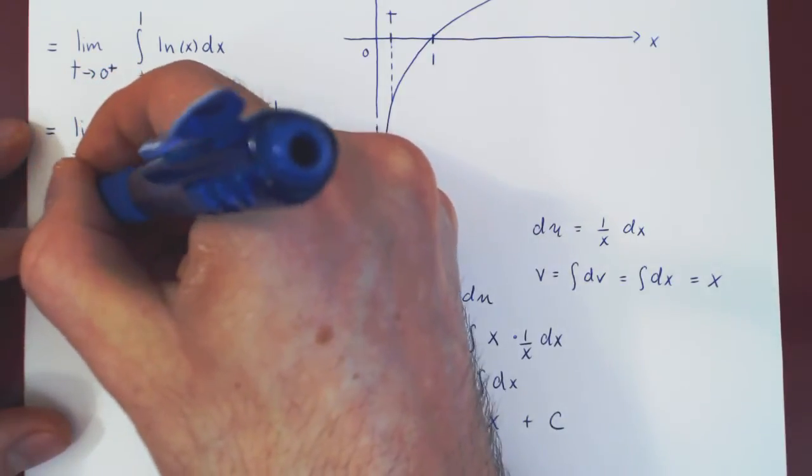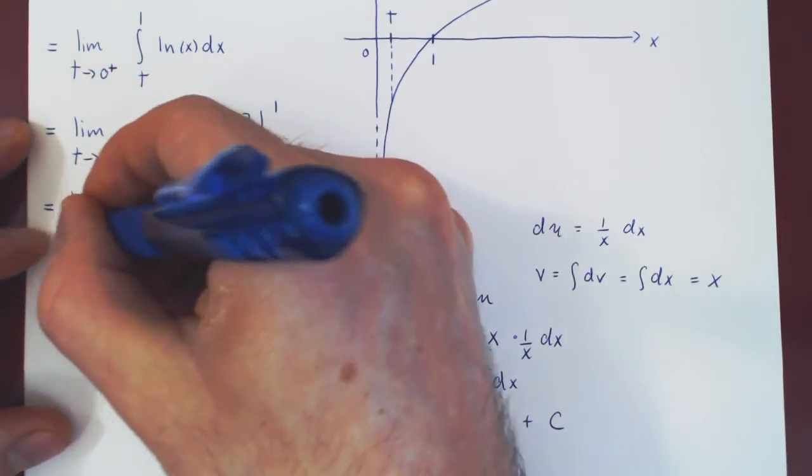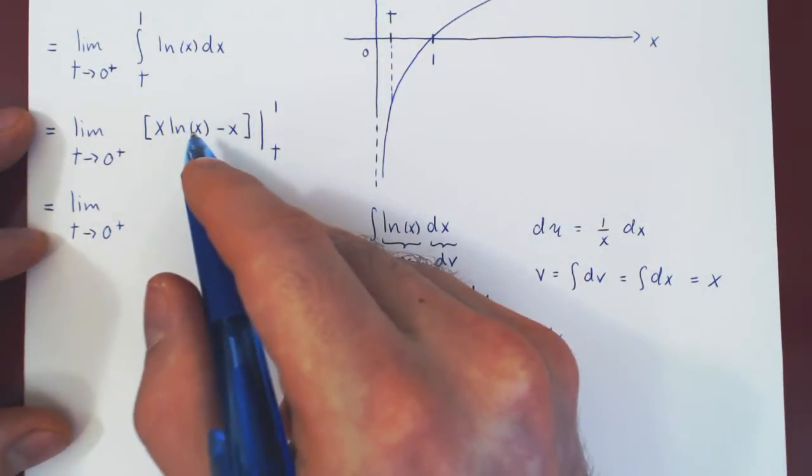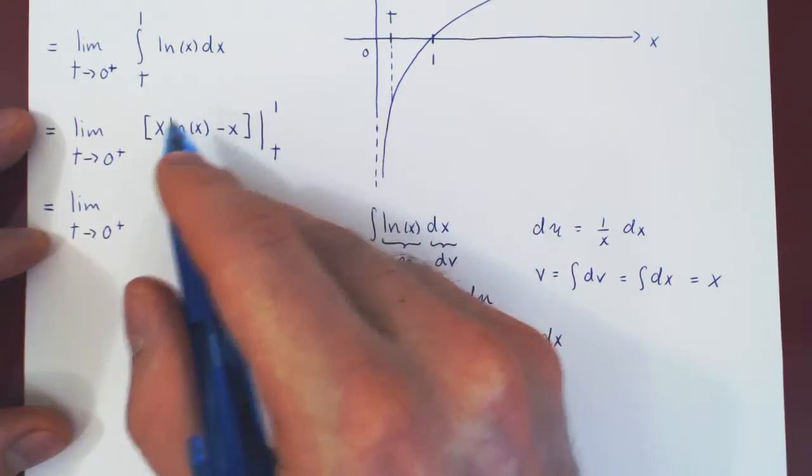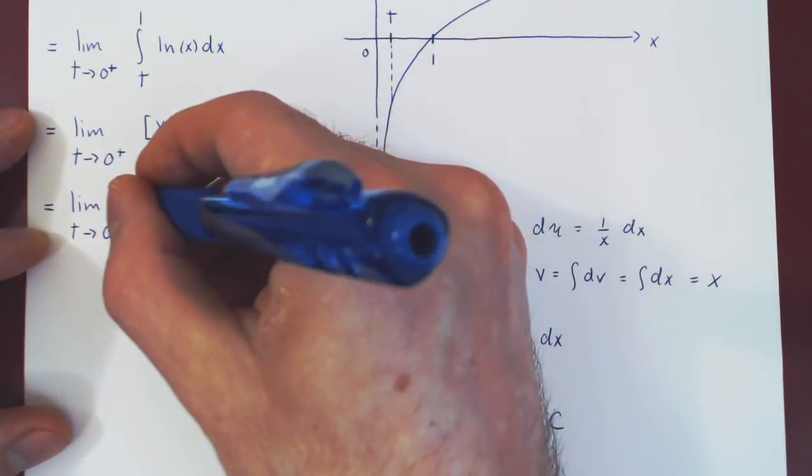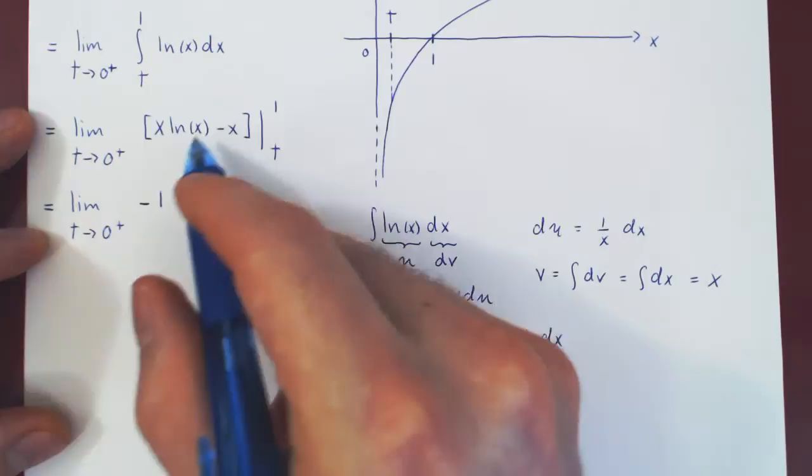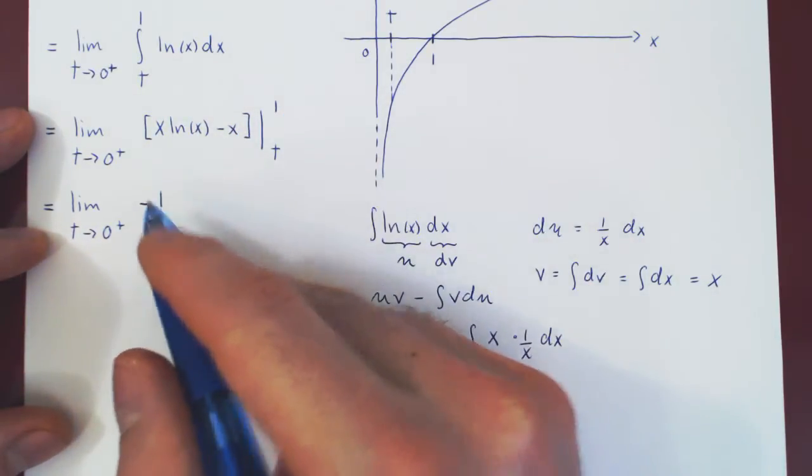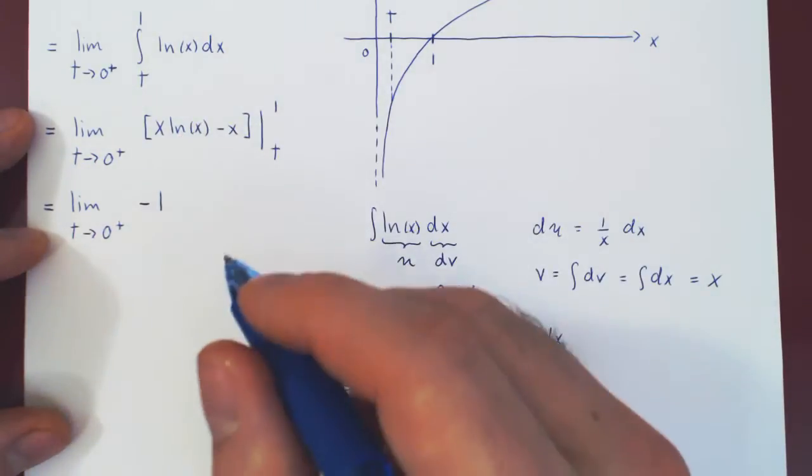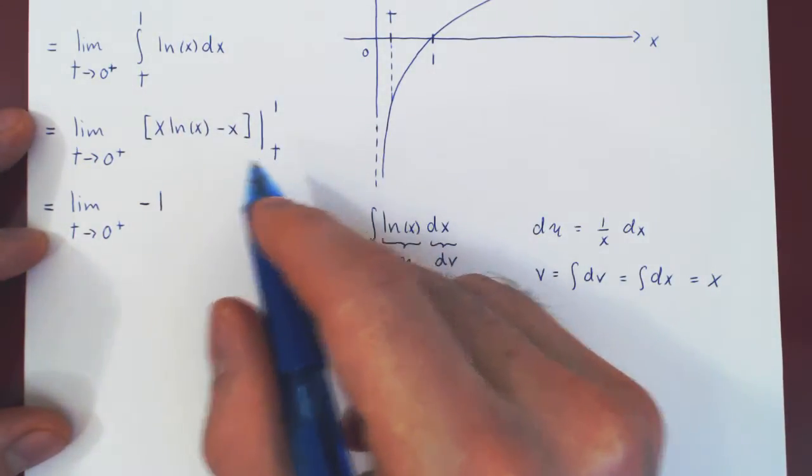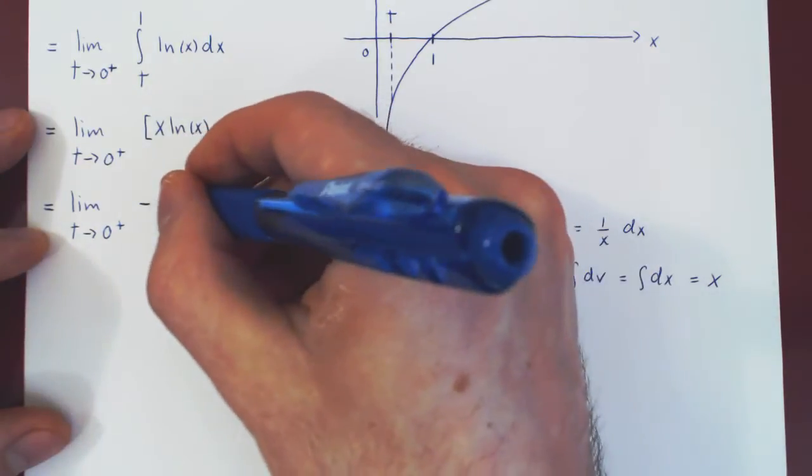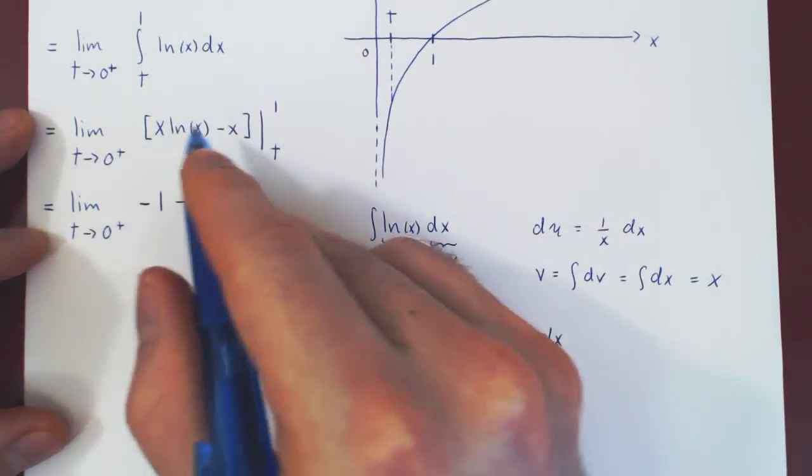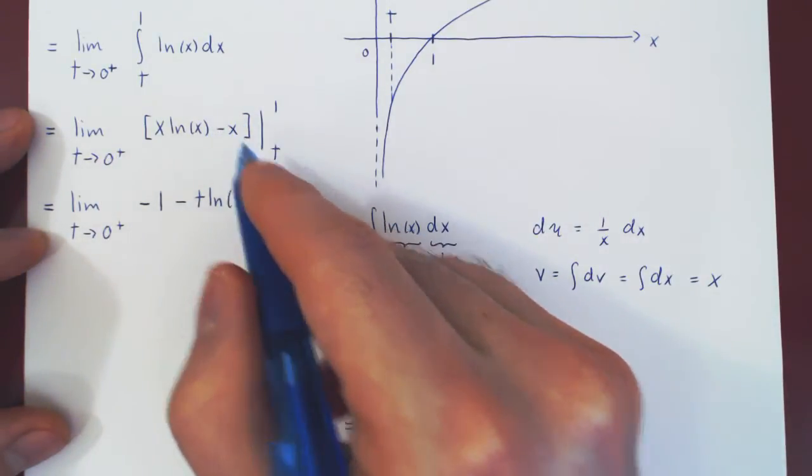So what do we have now? Well, the antiderivative at 1, 1 times ln of 1, but ln of 1 is 0, so this goes away, minus 1. So that is the result of the antiderivative at x equals 1, and of course minus the antiderivative at t. So we'll have minus t ln of t, minus minus, which is plus t.